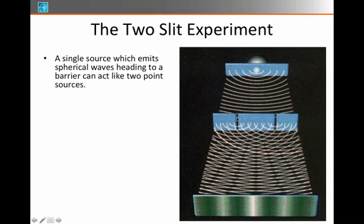The barrier has a pair of slits in it and each slit now acts like a source for circular waves to come out. So it acts like two point sources.